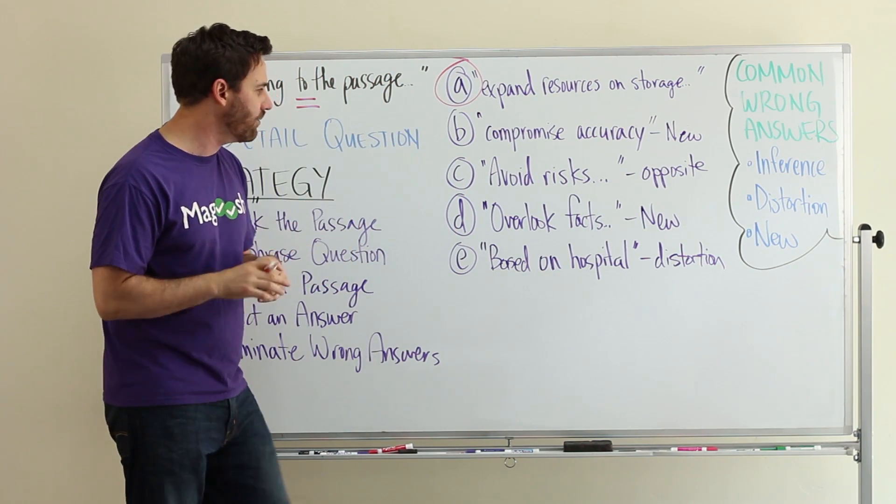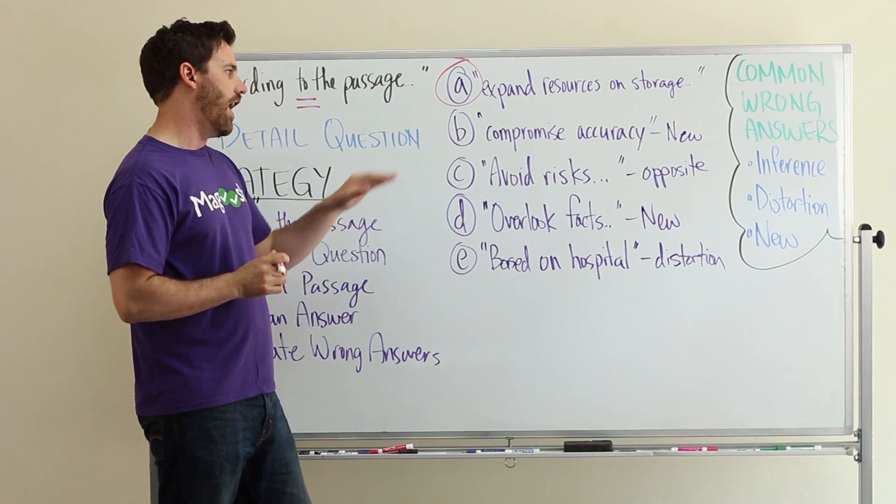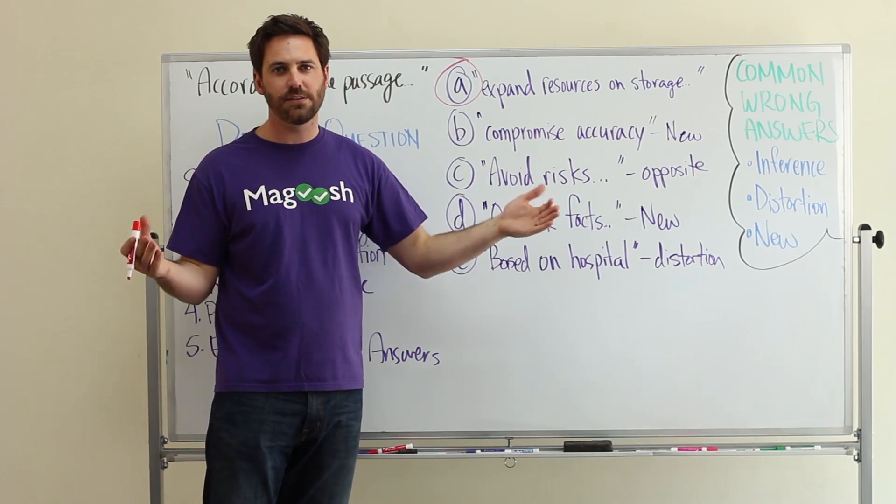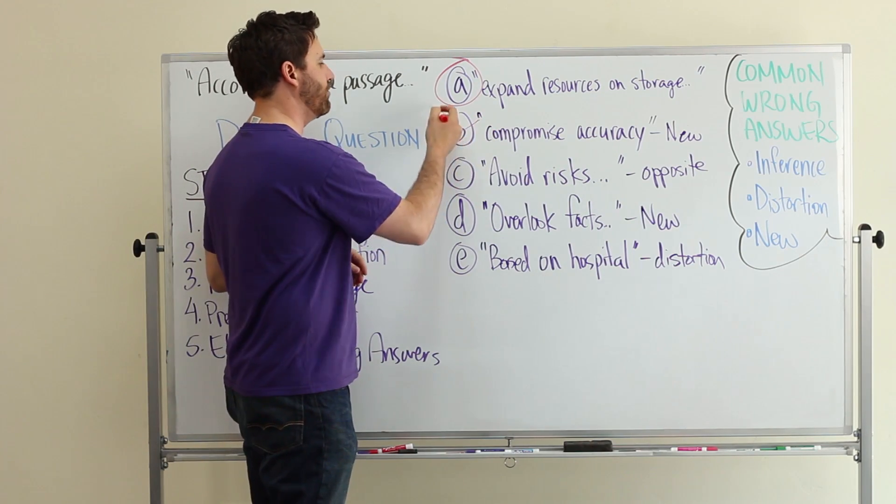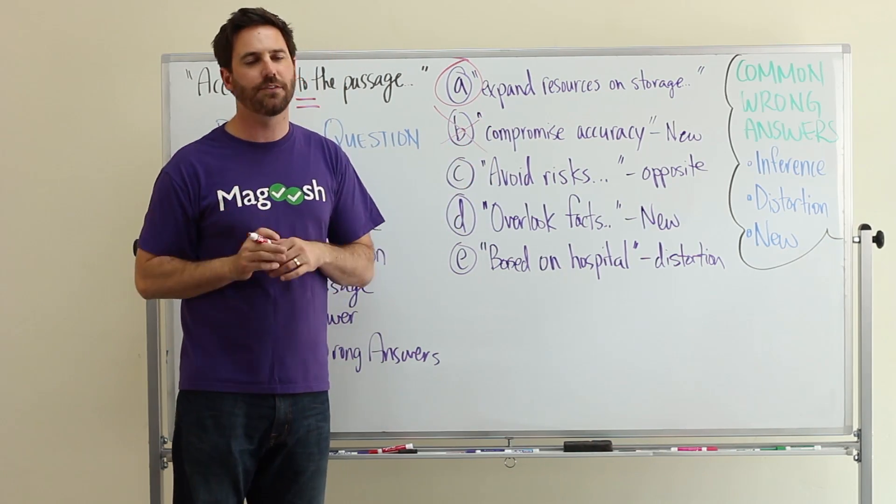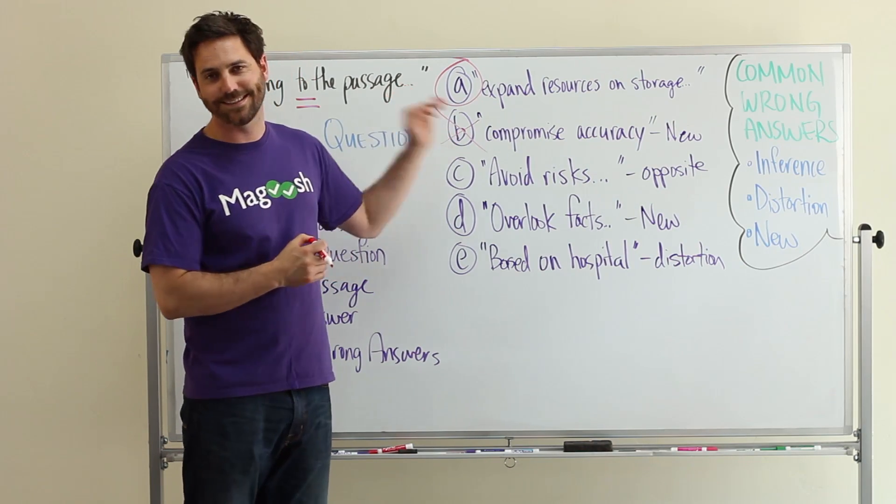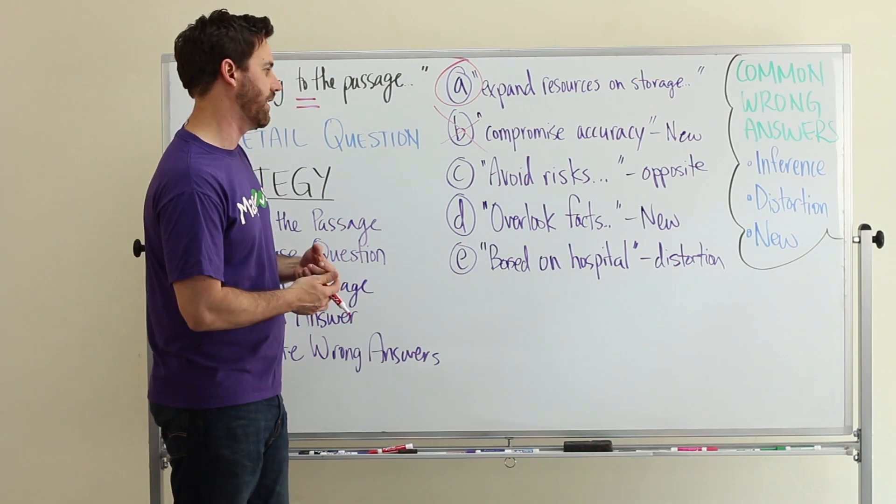B says compromise accuracy. There's nothing in the passage that talks about compromising accuracy. Maybe you would infer this from reading the passage, but there's nothing stated directly about the accuracy of the information being collected.